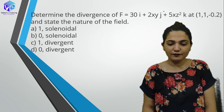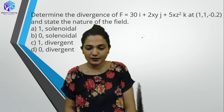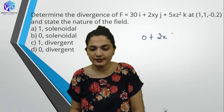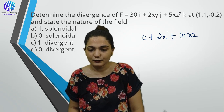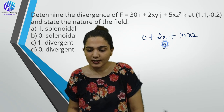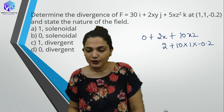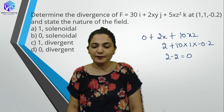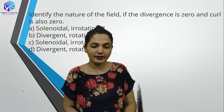Determine the divergence of the given field at a point. del(30)/del(x) = 0, del(2xy)/del(y) = 2x, del(5xz²)/del(z) = 10xz. Divergence = 0 + 2x + 10xz. Putting point values (x=1, z=−0.2): 2(1) + 10(1)(−0.2) = 2 − 2 = 0. Since divergence = 0, this is a solenoidal field.